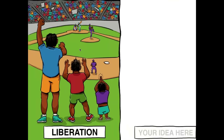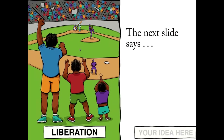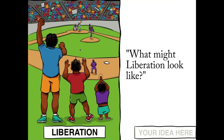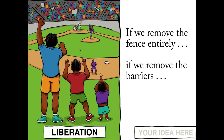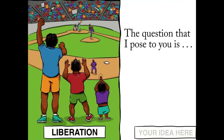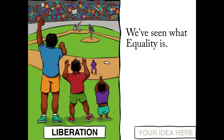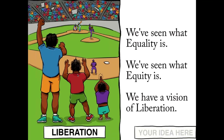The next slide pushes us a little further in terms of our thinking about insight and action. What might liberation look like? If we didn't have any barriers at all — if we remove the fence entirely, we remove the barriers entirely — then liberation might mean that they can all enjoy and participate in the game without any interruptions. We've seen what equality is, we've seen what equity is, we have a vision of liberation. What might the fourth box look like?